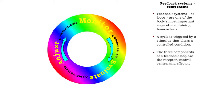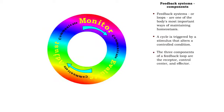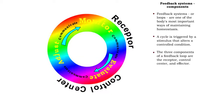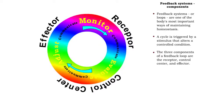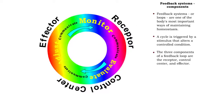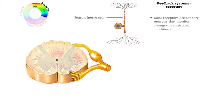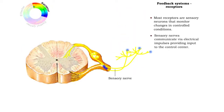All feedback loops have three main components — a receptor, control center, and effector — that communicate with one another to maintain controlled conditions. Most receptors are sensory nerve cells that monitor and communicate changes in the status of a controlled condition.